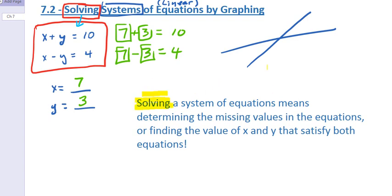Solving a system of equations means determining the missing values. And so here, of course, we have x and y. Or the other way to look at it is find the one value for x and the one value for y that satisfy or make true both equations.